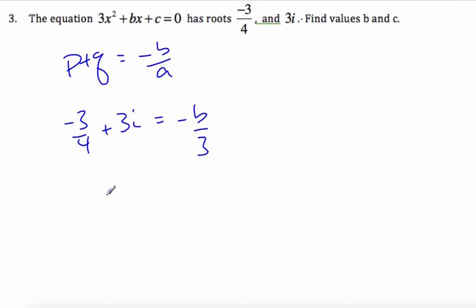And so if I multiply by negative 3, I get 9/4 minus 9i is equal to b. This is b.